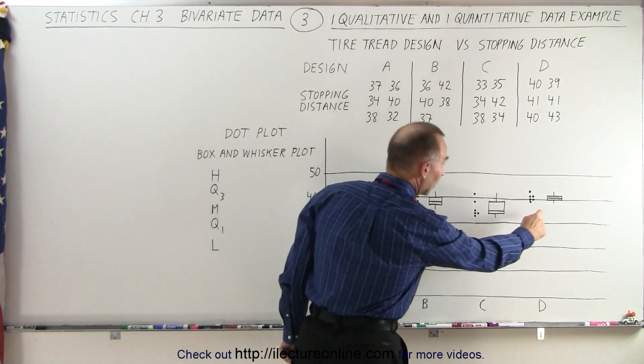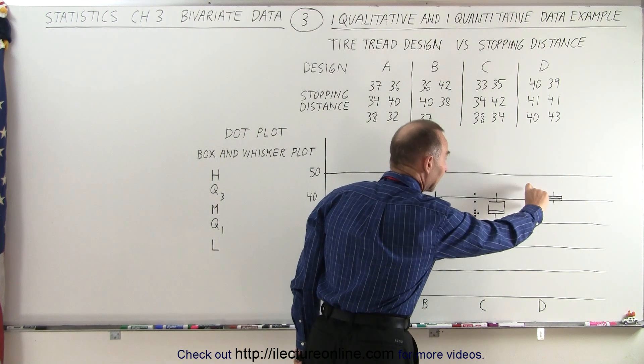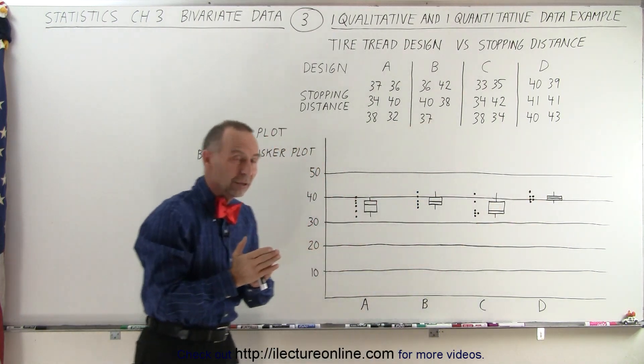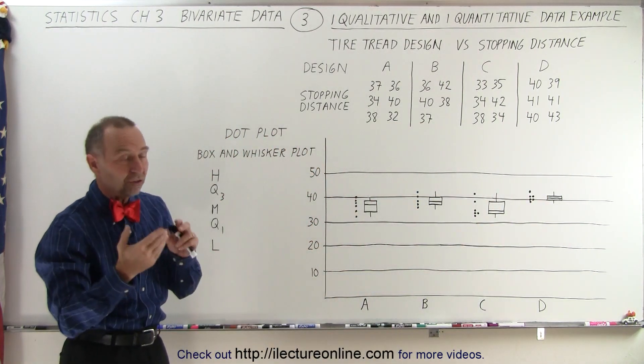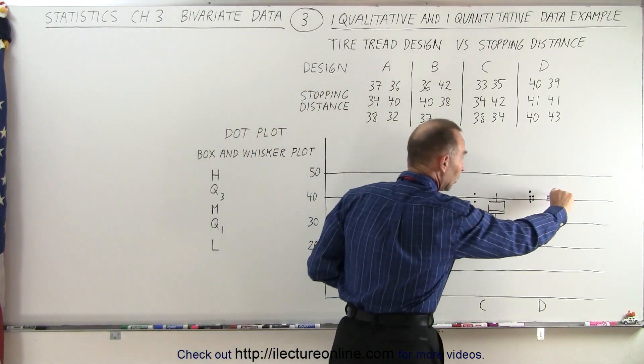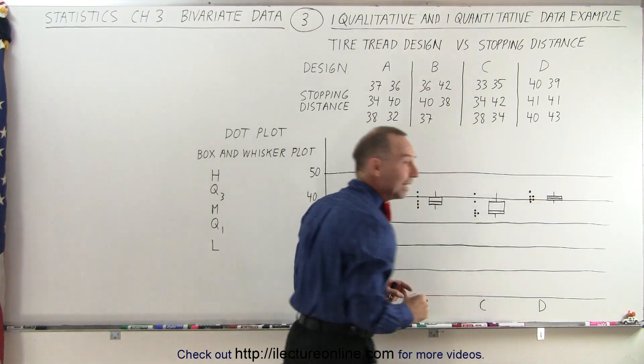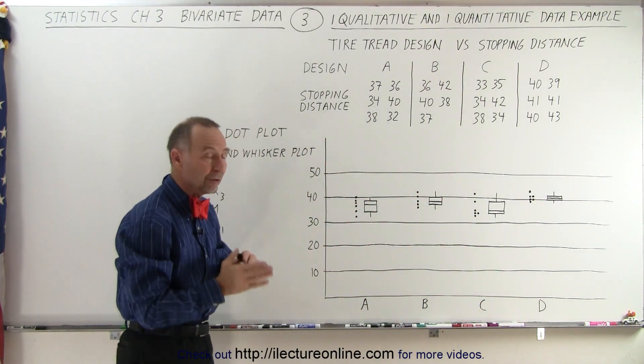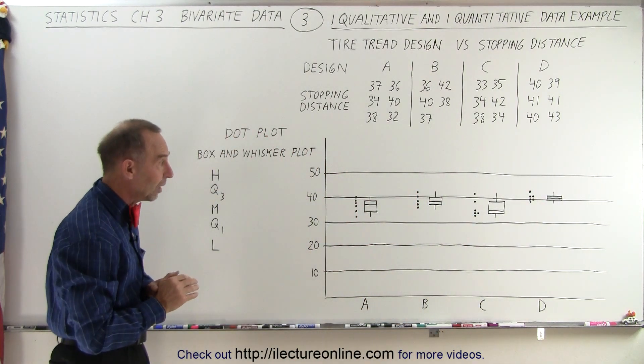Notice that when we look at tire D, the performance is very close together. In other words, they did six trials and the stopping distance was virtually the same for all six. You can see that if you draw the box and whisker plot, this box is very tiny. That means very little difference between the first and the third quartile.